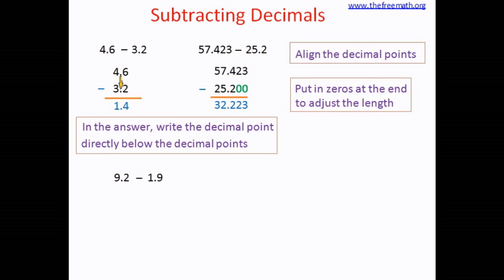The next example is 9.2 minus 1.9. The decimal points are aligned. Forgetting the decimal point, we subtract from right to left. The rightmost column has 2 and 9 — since 2 is smaller than 9, we borrow from the next column. We borrow 1 from 9, so 9 becomes 8 and 2 becomes 12. So 12 minus 9 equals 3, and 8 minus 1 equals 7. We write the decimal point directly below, and the answer is 7.3.